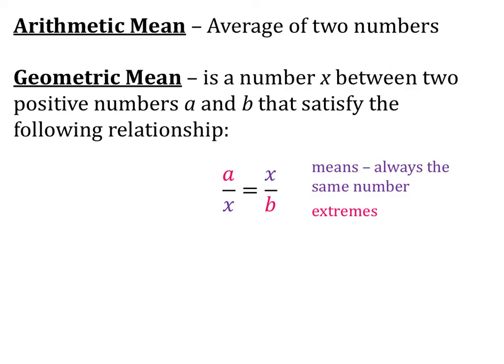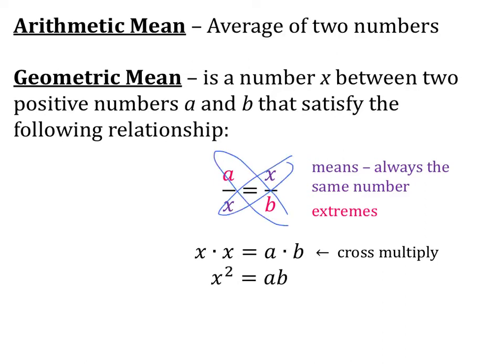The geometric mean is the number x between two positive numbers a and b that satisfy the following relationship: a over x equals x over b, where x is the means — it's always the same number — and a and b are the extremes. When solving this you will cross multiply, so x times x equals a times b, meaning x squared equals ab. Then to cancel out the square, we take the square root of both sides, and so x is equal to the square root of ab.